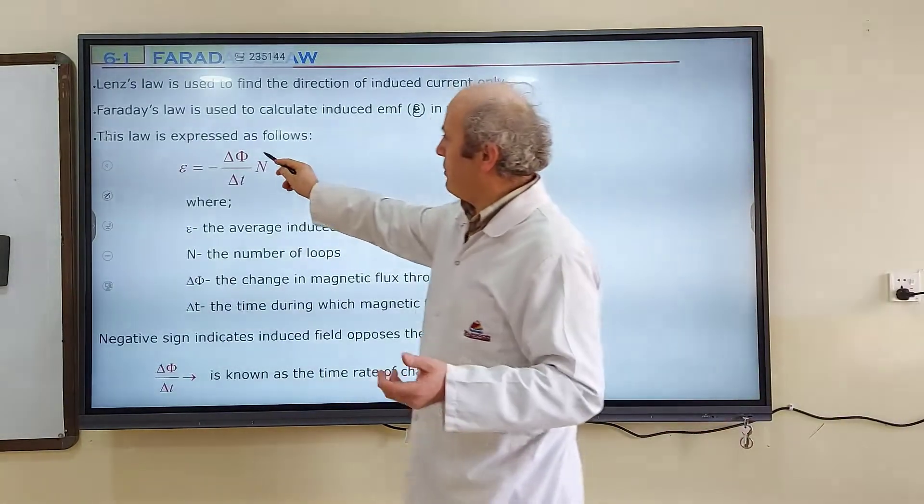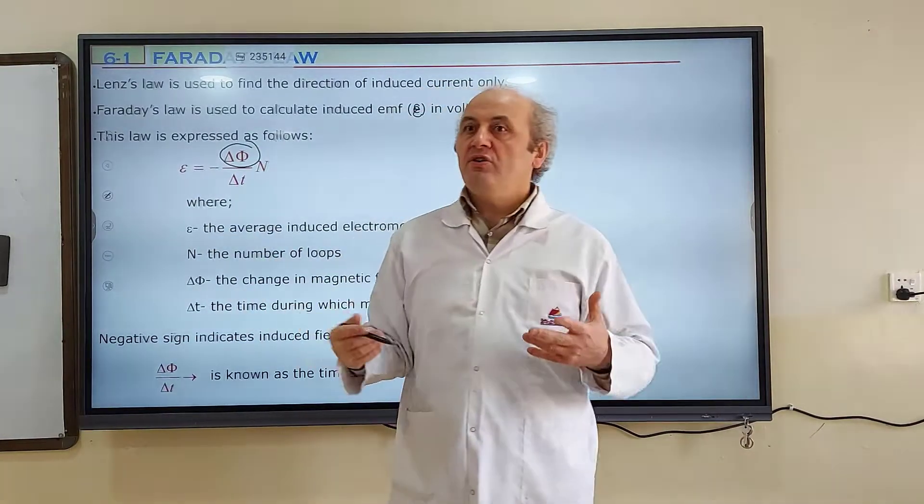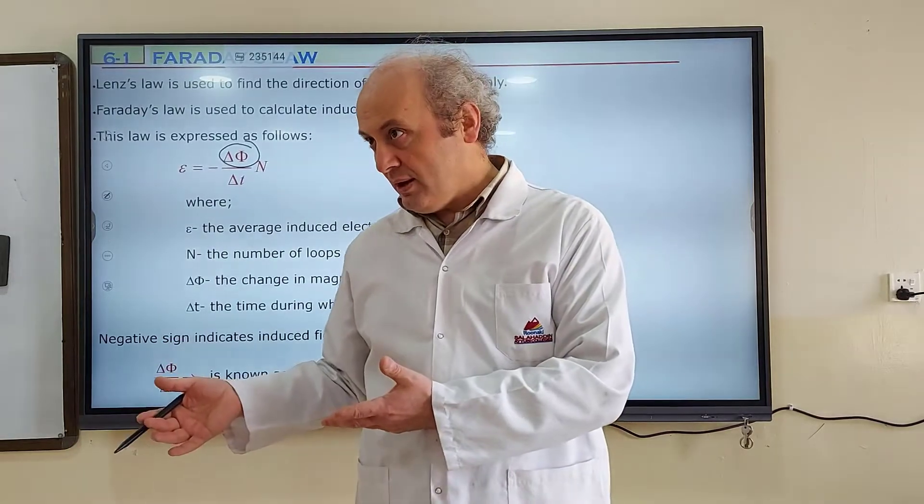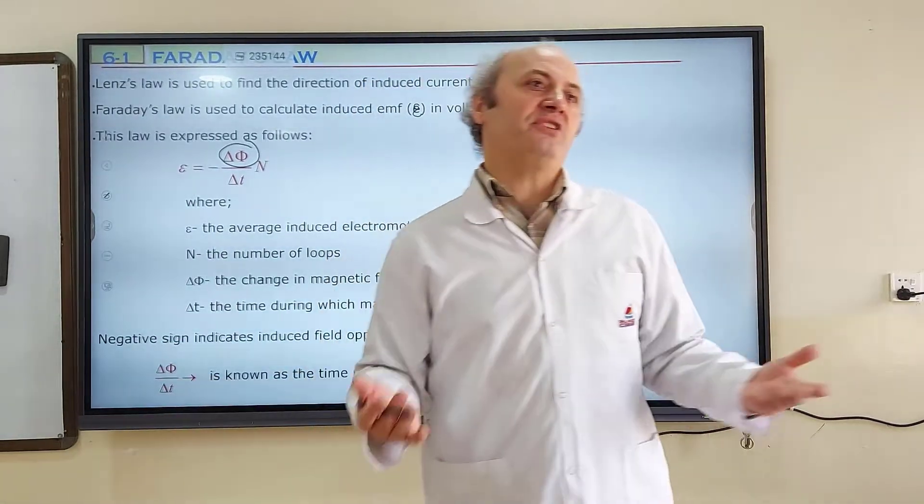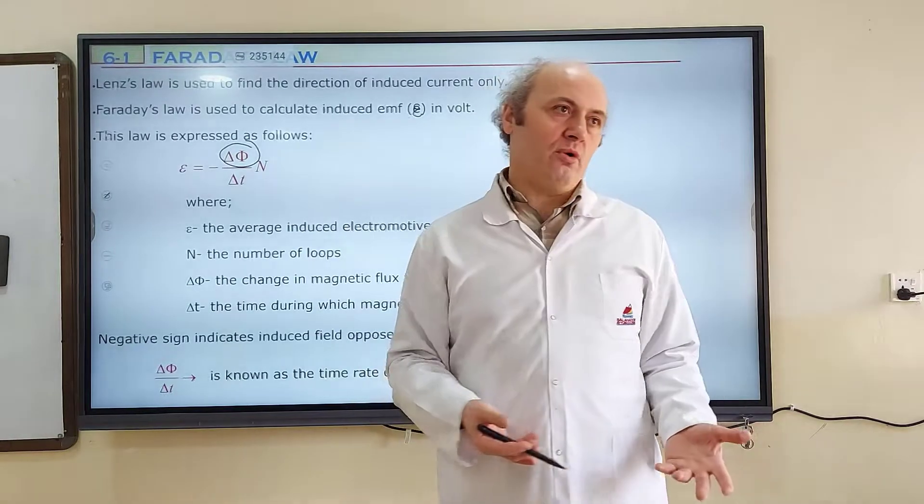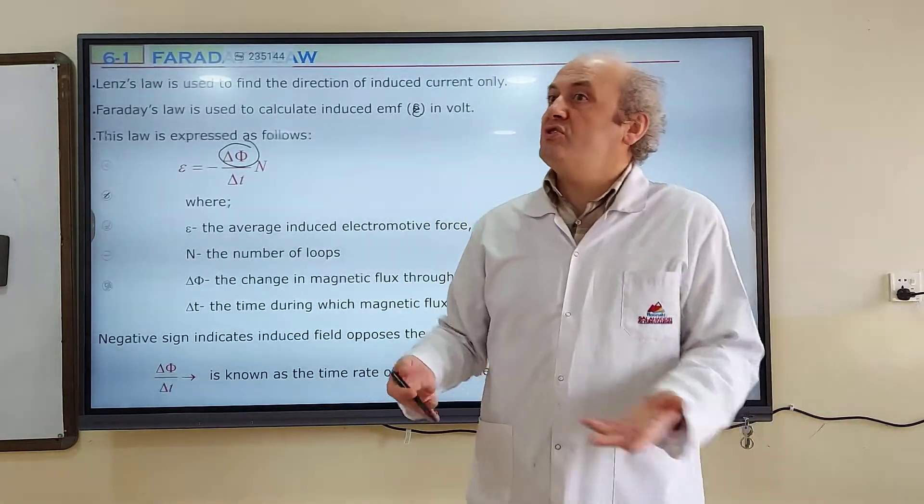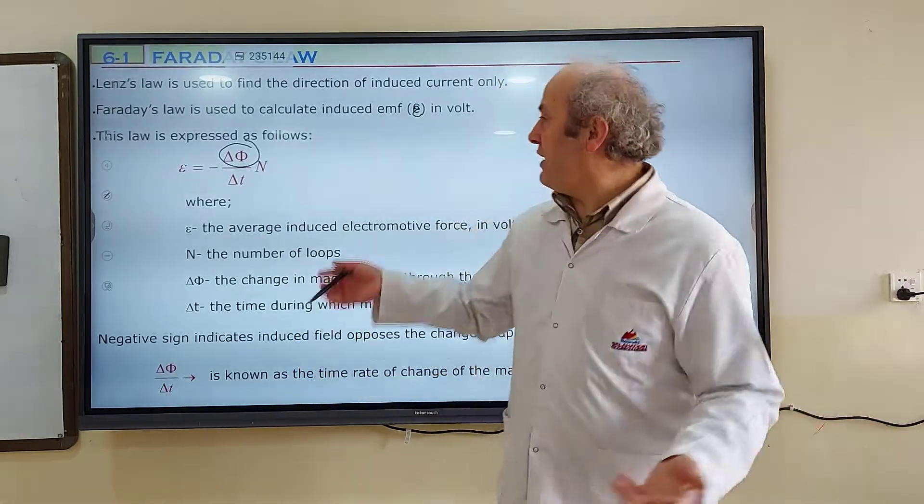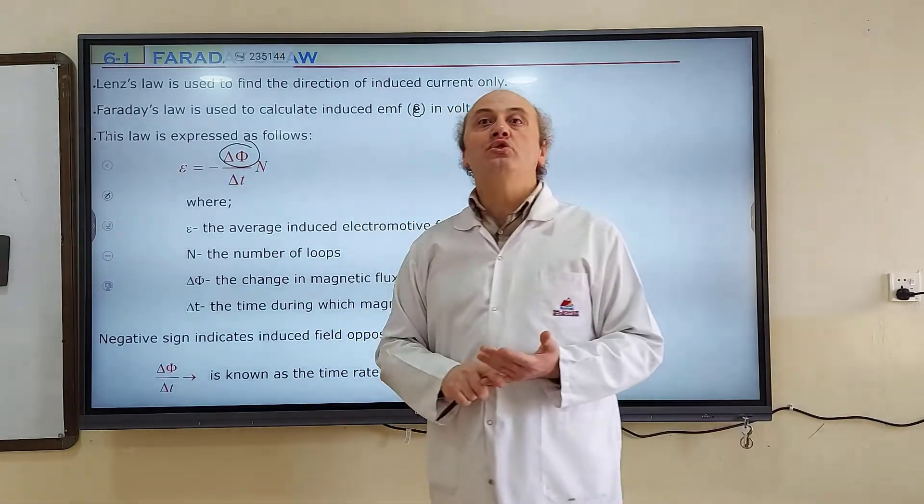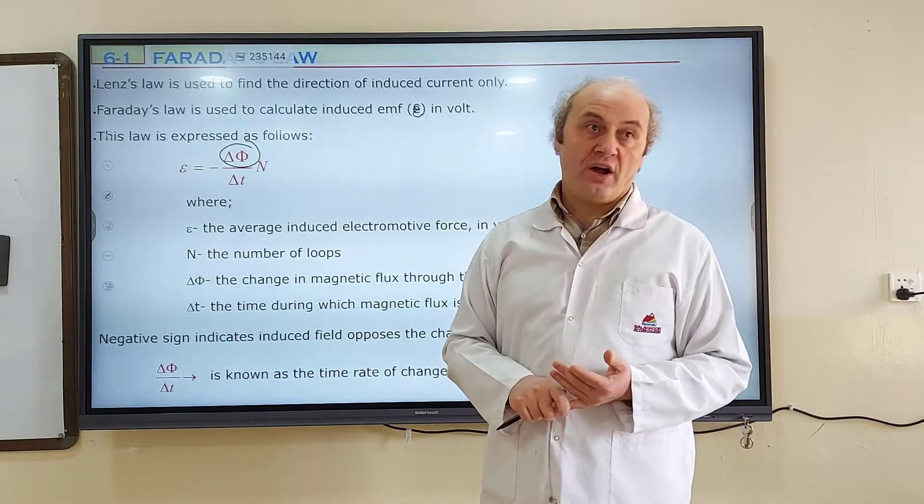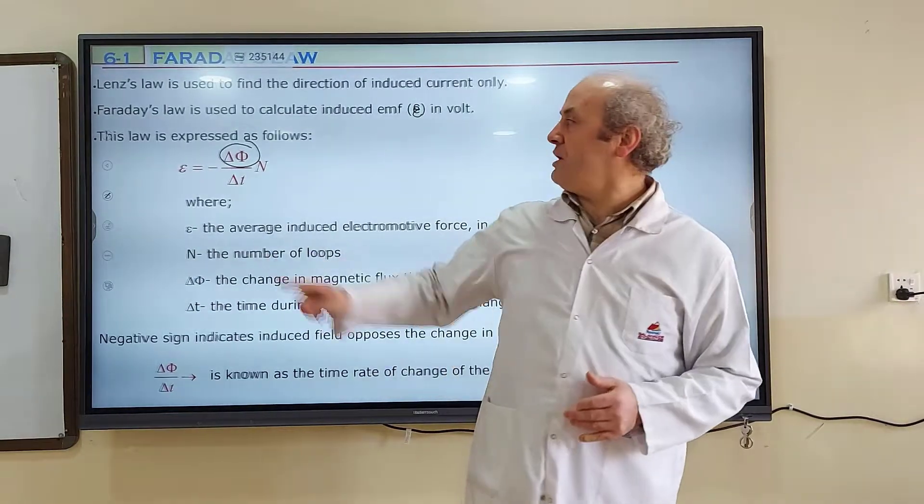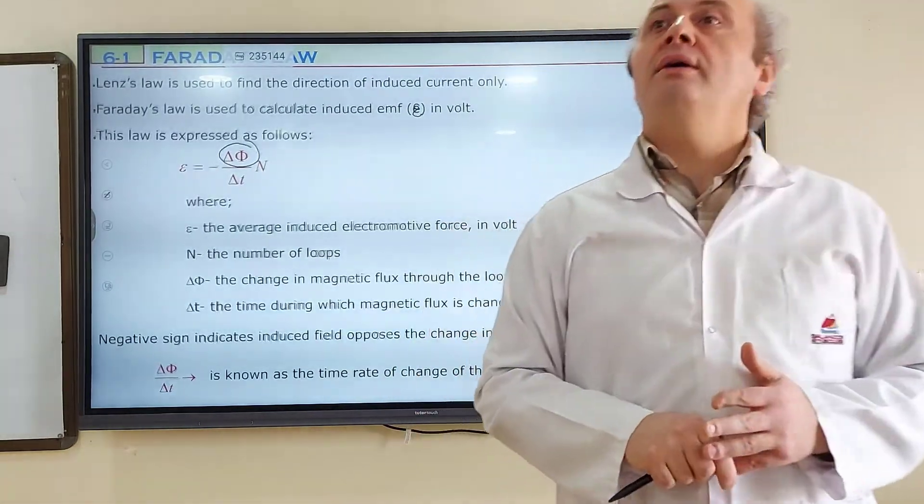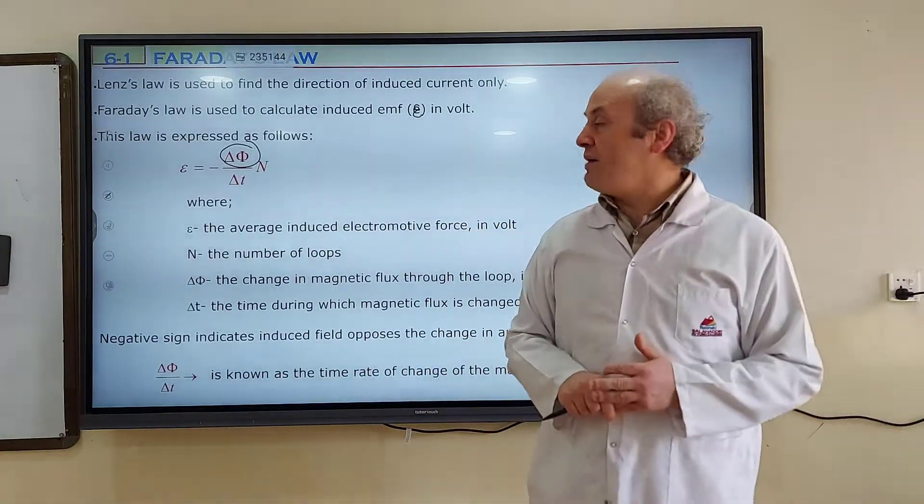If this change is big, induced EMF is expected to be greater. If this change is smaller, you expect induced EMF to be smaller. If this change is zero, there is no induced EMF. That's why delta phi is in the numerator of this equation, directly proportional. Induced EMF epsilon is directly proportional to the change in magnetic flux.